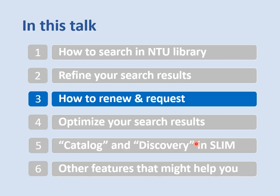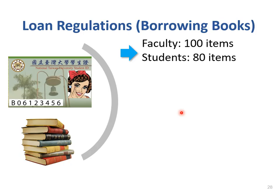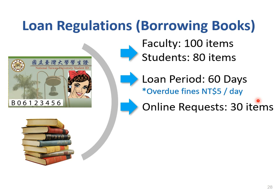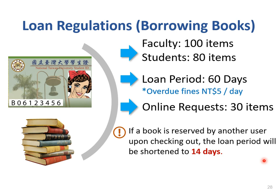In this part, I will introduce how to renew the books which you have borrowed, and also how to request a book which is checked out by someone. Let's begin with the loan regulation. For students, you are allowed to borrow 80 items. The loan period is 60 days. If the loan period is up and no one has made a request, you are able to renew the items online. If a book is already checked out by others, you can make an online request — you can request at most 30 items. If a book is reserved by another user upon checking out, the loan period will be shortened to 14 days.